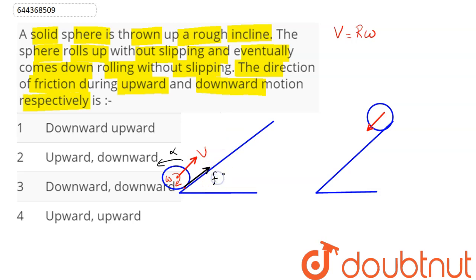So while rolling up, friction must be in upward direction. Now when it rolls down, initially it rolls with initial velocity as zero, and when it comes down we can say its velocity increases and its angular velocity also increases.